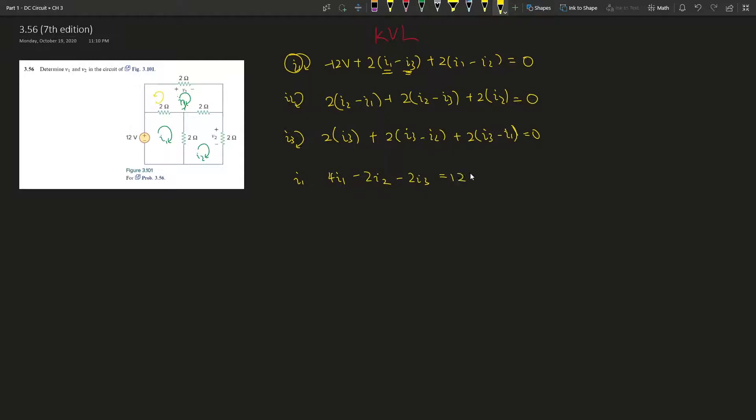Okay, i2. I'm just simplifying it. This is negative 1, so just negative 2, negative 2i1. So there's 6, so plus 6i2, and negative 2i3 equals 0. Let's check that.